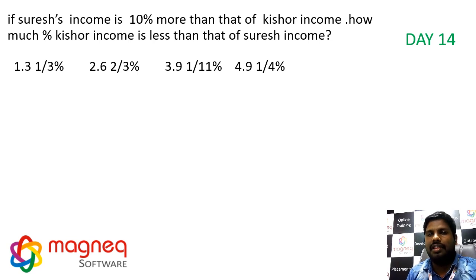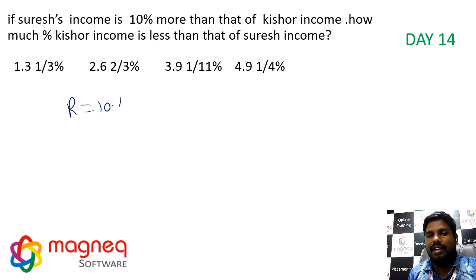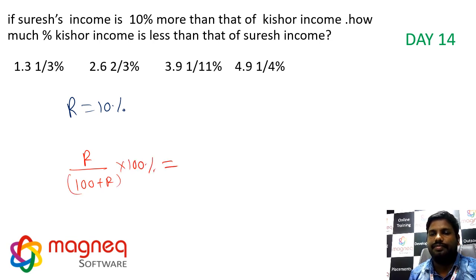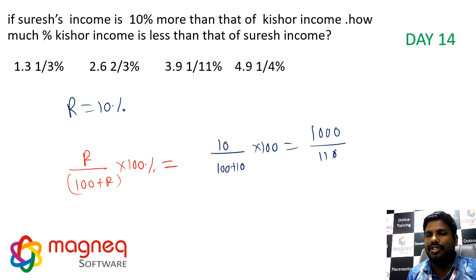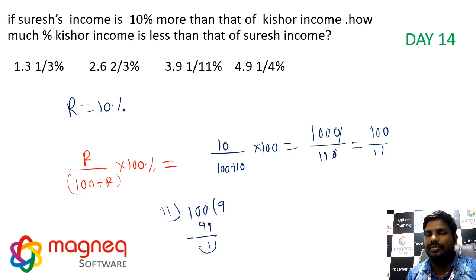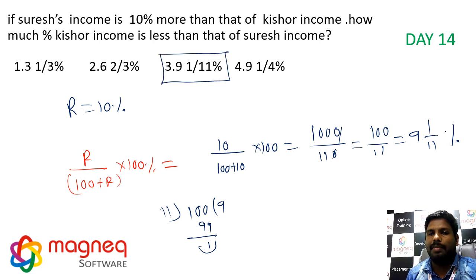If Suresh's income is 10% more than Kishore's income, how much percentage is Kishore's income less than Suresh's? R equals 10%, using formula R by (100 plus R) into 100: 10 by 110 into 100 equals 1000 by 110 equals 100 by 11, which converts to 9 and 1 by 11 percentage. Third option: 9 and 1 by 11 percentage.